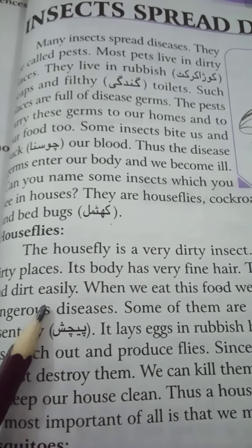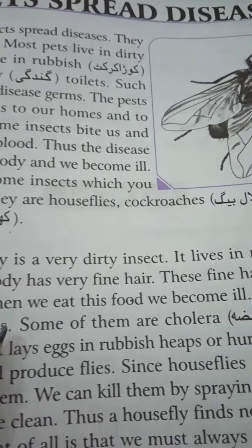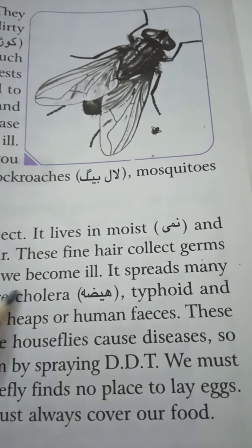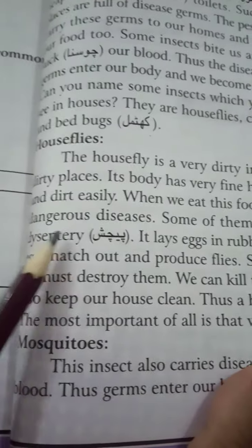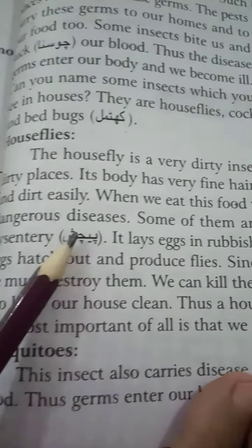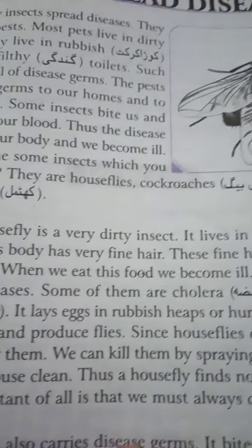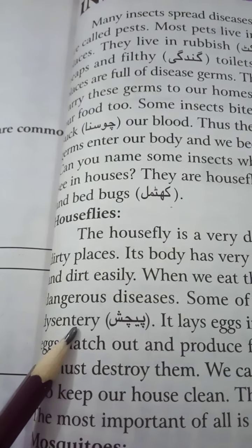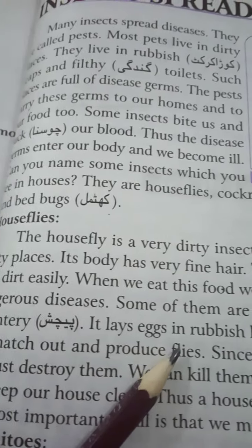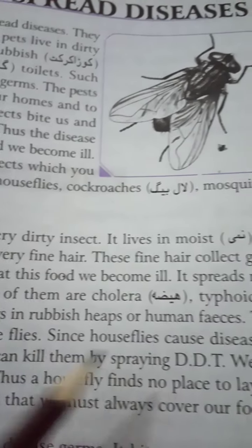First we will read about house flies. The house fly is a very dirty insect. It lives in moist and dirty places. Its body has very fine hair. These fine hairs collect germs and dirt easily. (مکھی کے جسم پر بہت باریک بال ہوتے ہیں جن میں جراثیم اور گندگی آسانی سے جمع ہو جاتی ہے۔)